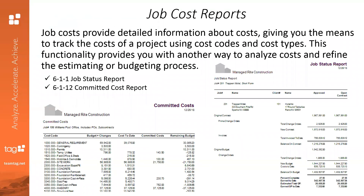Sage 100 Contractor breaks down job costs through cost codes and cost types. You have the capability to use a custom cost code structure or one of the pre-built standard industry cost codes. This detail in reporting allows you to refine your estimating or budgeting process. If you're using the estimating module within Sage 100 Contractor or Sage Timberline estimating, you can export that estimate right into the project budget, and estimating basic lets you export all your purchase orders and subcontracts with just a couple of clicks.